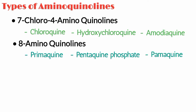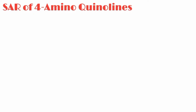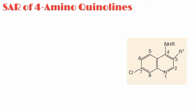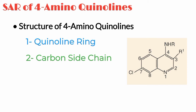In this video we will only discuss the SAR of 4-aminoquinolines. Looking at the structure of 4-aminoquinolines, there are three main points to consider: first, the quinoline ring; second, the carbon side chain at the N4 position; and third, the tertiary nitrogen.